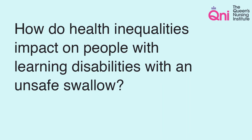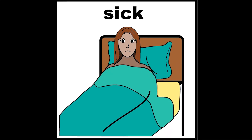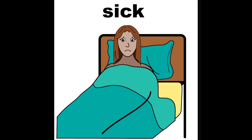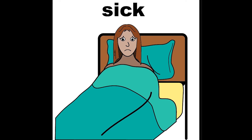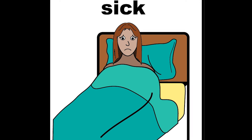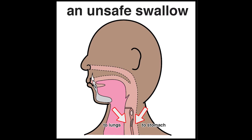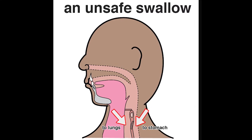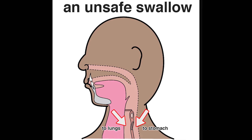How do health inequalities impact on people with learning disabilities with an unsafe swallow? Often the signs of an unsafe swallow are missed. This can mean that the person becomes unwell because they're finding it hard to eat and drink. Finding it hard to eat and drink may cause food and drink to go down the wrong way, which may cause chest infections, discomfort, weight loss and choking.